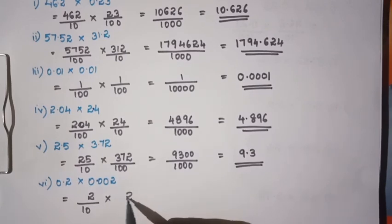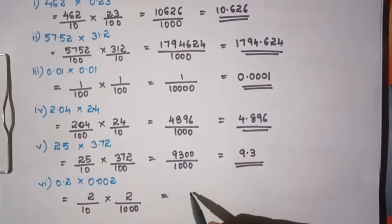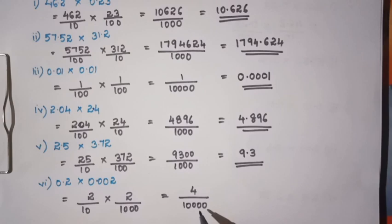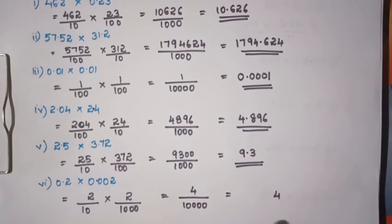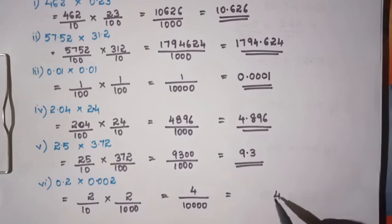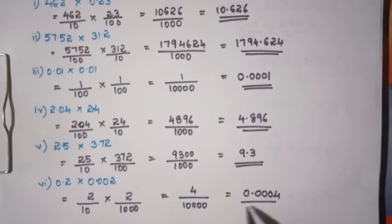2 divided by 3 relates to the power of 10. We count the decimal digits: 4 divided by 4 gives us 1, 2, 3, 4. Working through the division: 3 divided by 4 divided by 3 divided by 4. The answer is 0.0004.